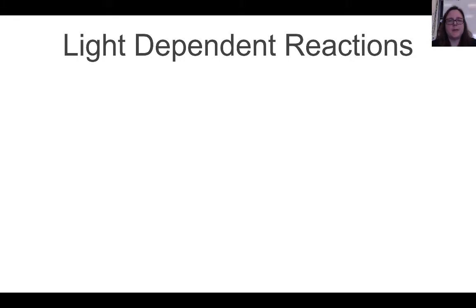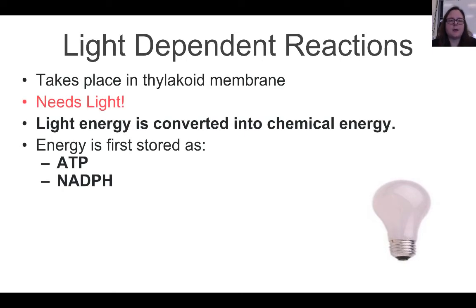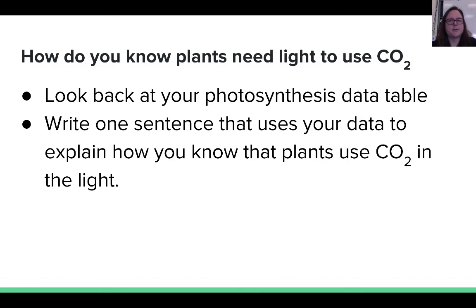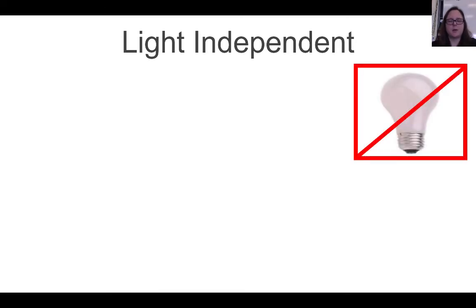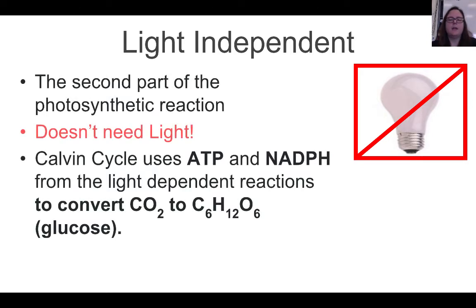Photosynthesis actually has two parts, or two steps. The first step is a light-dependent reaction, which requires light. It takes place in the thylakoid membrane, and this is where light energy is converted into chemical energy — energy is first stored as ATP and NADPH. After the light-dependent reaction, there's a light-independent reaction, which does not require light. Here, there's a process called the Calvin cycle, which uses the ATP and the NADPH from the light-dependent reactions to convert the carbon dioxide into glucose.